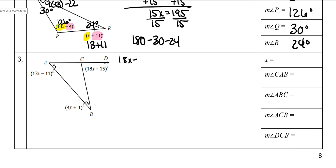We're going to do 18x minus 15 is equal to, then add both of these together. So 13x minus 11 plus 4x plus 1. My left side, there's nothing to combine, so I'm just going to rewrite it. But my right side, I have 13 plus 4, which is 17x. And then I have negative 11 plus 1, which would be minus 10.